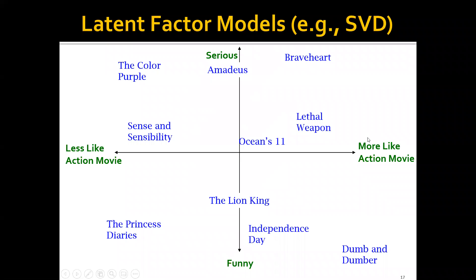The basic idea of the latent factor model is to map each user and item into a latent space where each dimension represents some factor. For example, the first dimension represents whether this movie is more like an action movie or less like an action movie. The second dimension represents whether this movie is more serious or more like a funny movie.